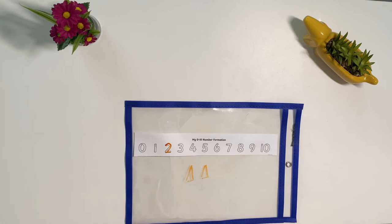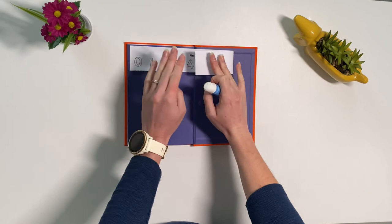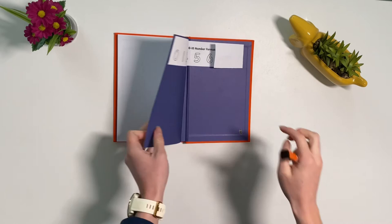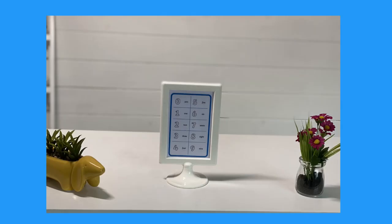You can stick these at the back of children's workbooks. That way they will always have a prompt of how to form their numbers. They can turn to the back of their books whenever they need to check how to form a number. They can even use it as a number line.